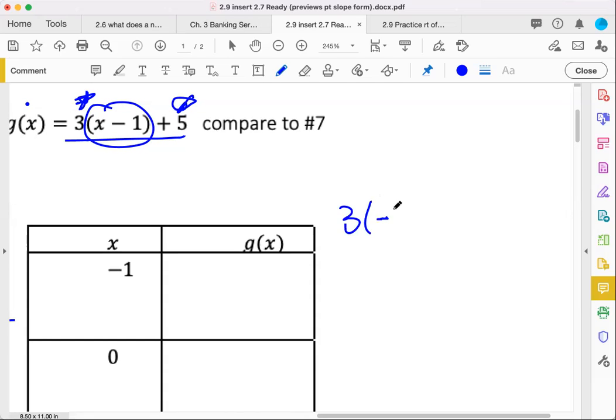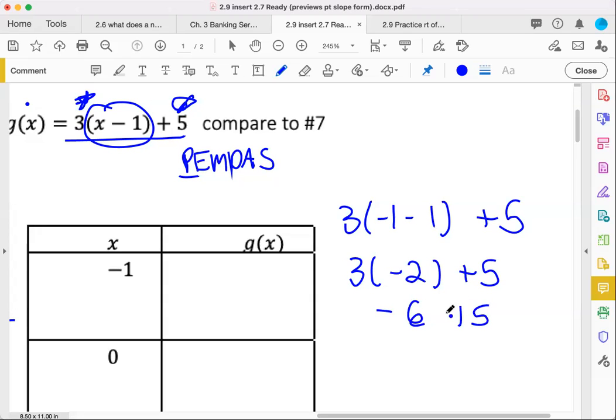We'll plug in where x is negative 1 in parentheses here, so a little bit of order of operations. Nothing we can't handle. We see parentheses before anything else. So negative 1 minus 1, what kind of 2 do you think that's going to be? Hopefully you're saying negative 2. 3 times negative 2 is negative 6, add 5. So negative 6 plus 5 is negative 1.